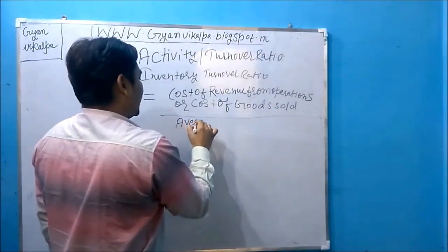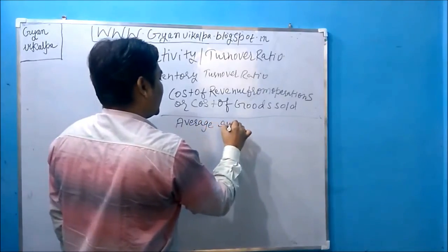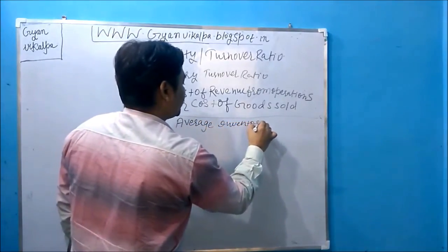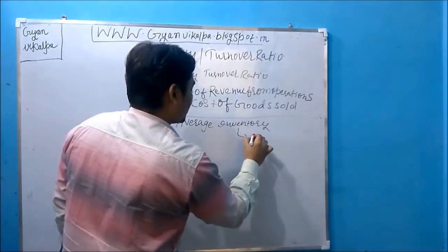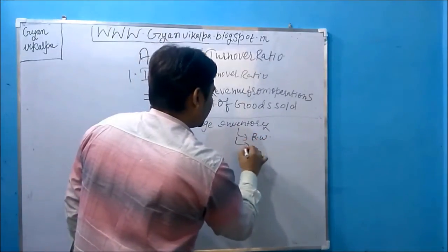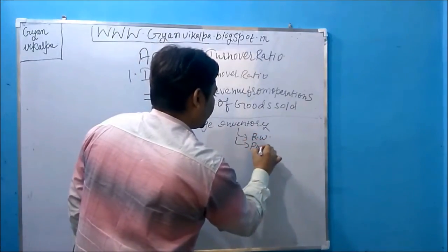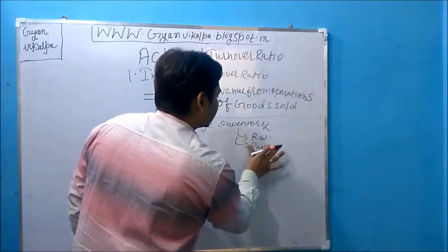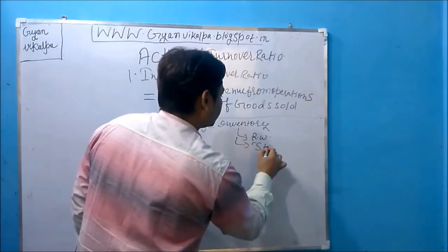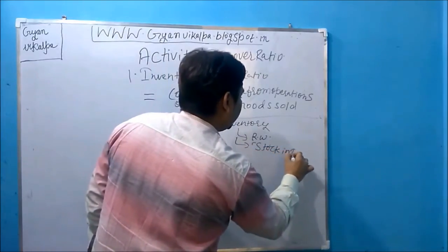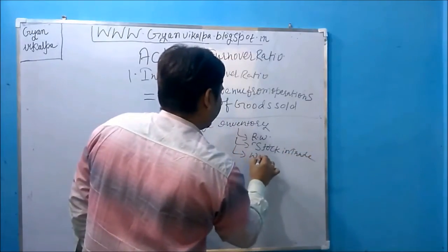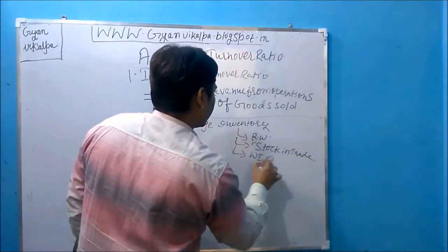In average inventory, we will be excluding spares and tools, and we will be including raw material, purchase of stock in trade, work in progress (WIP), and finished goods.